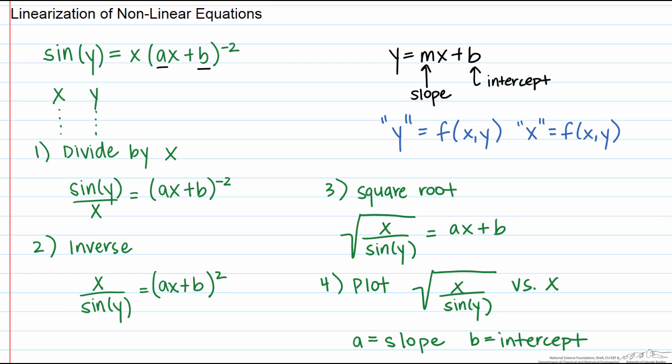So how would we set this up on a spreadsheet? The first thing you would do is take all your x data and all your y data and then you would make a column here that's just x divided by sine of y and now you can plot this column versus this column to get our linear equation.